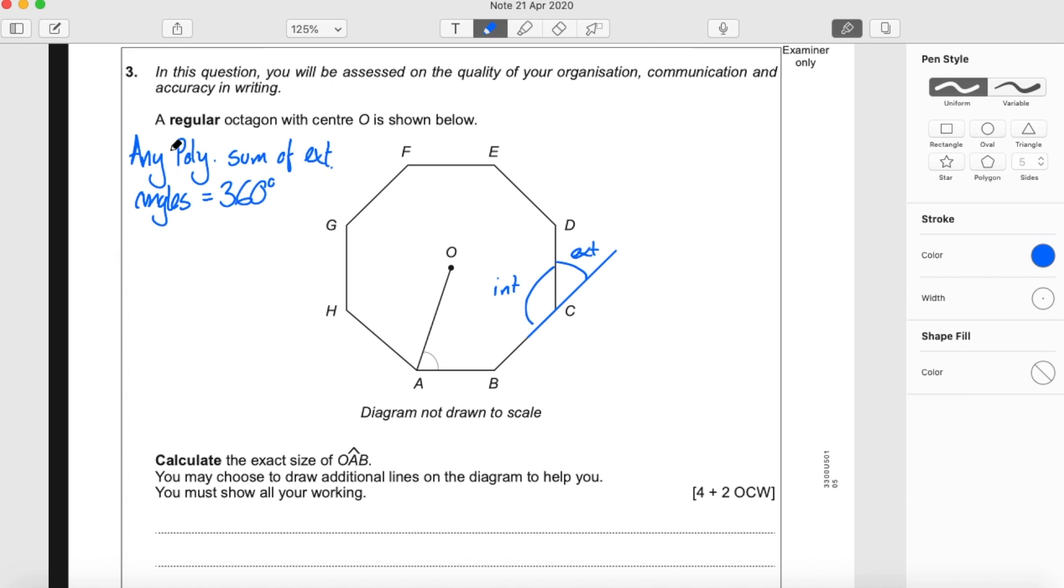Now we are lucky here because our octagon is regular, which means that all the angle sizes are the same and all the lengths of the sides are the same. So all these external angles will be the same size. So we can say that 360 degrees divided by the 8 external angles, since it is an octagon with 8 sides and 8 angles, gives us 45 degrees. So each external angle is 45 degrees.